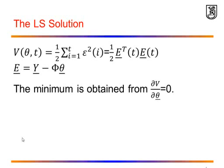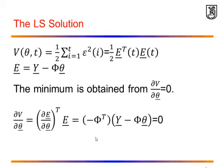If we apply these simple rules to our cost function V, we notice that V is equal to one half e transpose e. If we take the gradient of V with respect to theta, we have to use the chain rule. We differentiate first with respect to e and then differentiate e with respect to theta. The result of this differentiation would be the partial derivative of e with respect to theta times the vector e, and that will be equal to minus phi transpose times y minus phi theta.